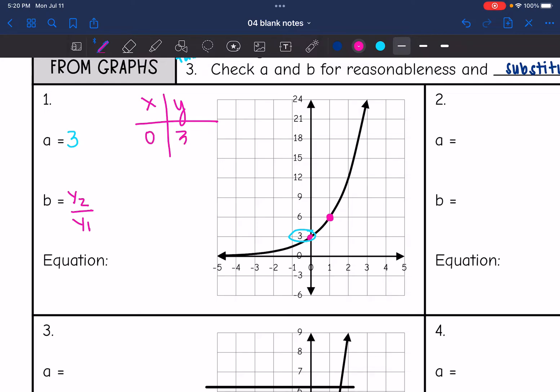The y-intercept was (0, 3). And that other point that I labeled was (1, 6). So there's my two consecutive points. So 3 would be y1 and 6 would be y2. So to do y2 divided by y1, I would do 6 divided by 3, which is 2.